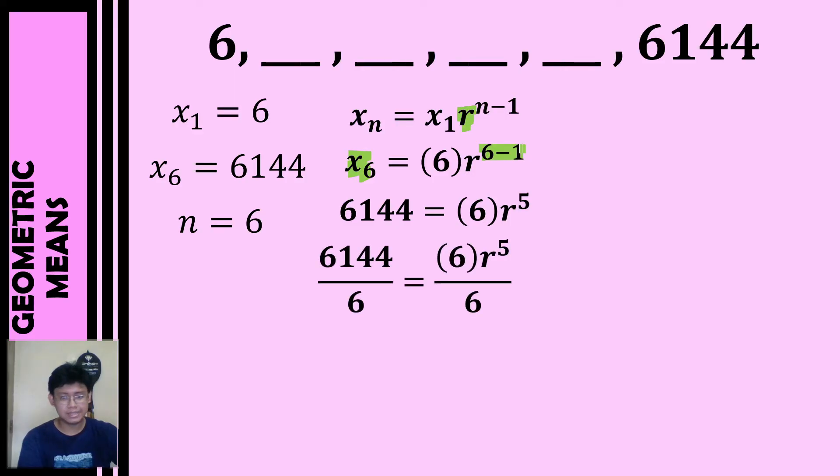Let's proceed to solving for the value of r. Let's divide both sides by 6 to cancel out the coefficient. So 6,144 divided by 6 gives us 1,024. Then, to get the value of r, we will get the fifth root of both sides. And the fifth root of 1,024 equals 4. That is our common ratio.